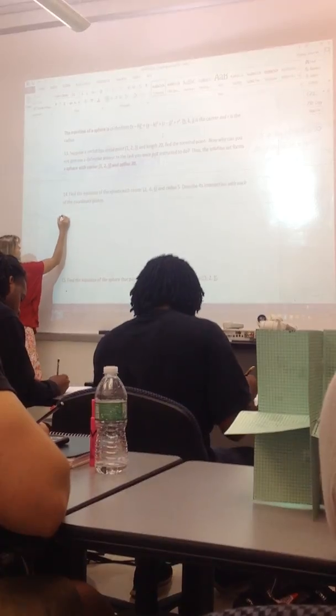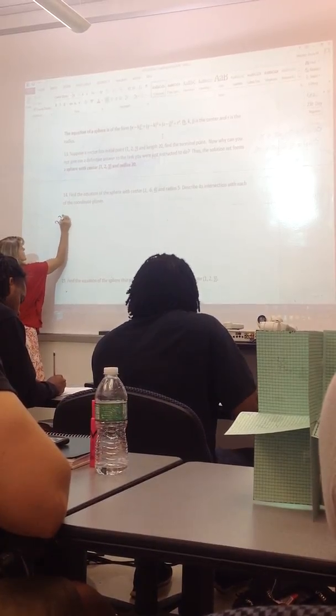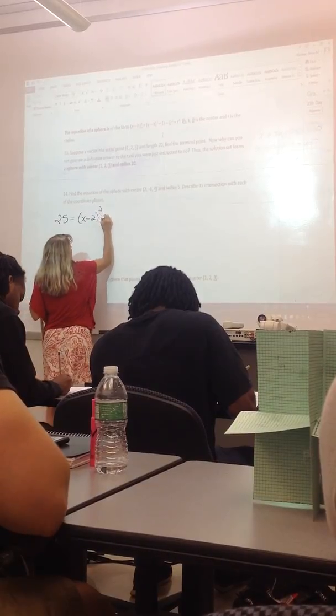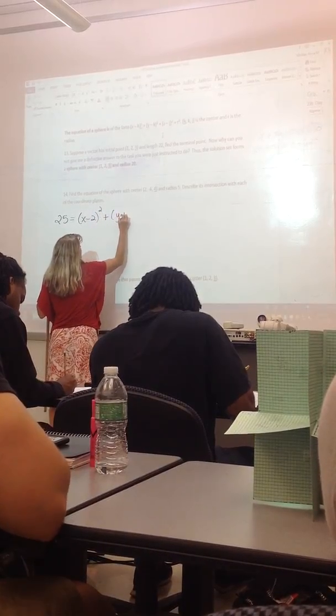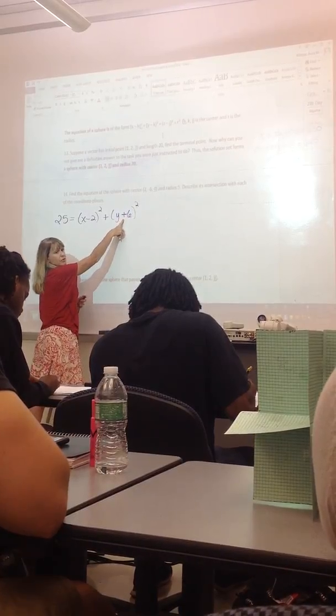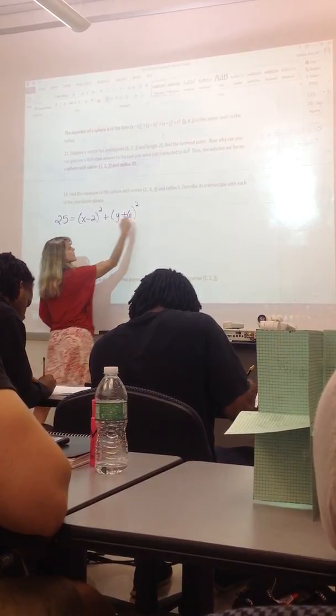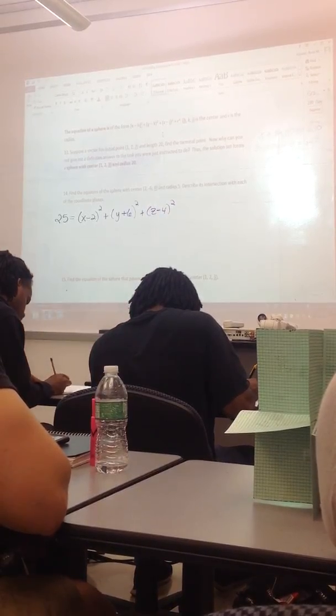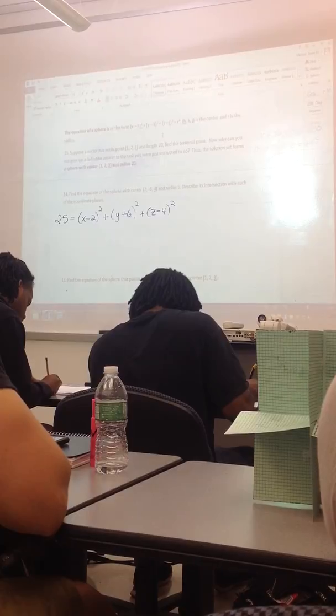So just answering that part, we would have 25 equals x minus 2 squared plus y plus 6. Is everybody okay with why this is plus 6? It's minus minus 6. Z minus 4 squared. Okay, so that's the first part of the question.